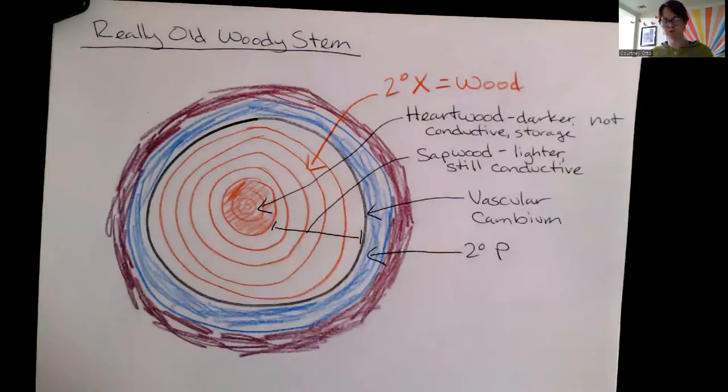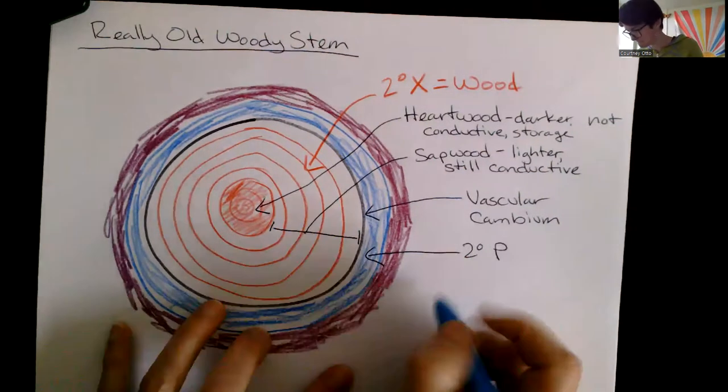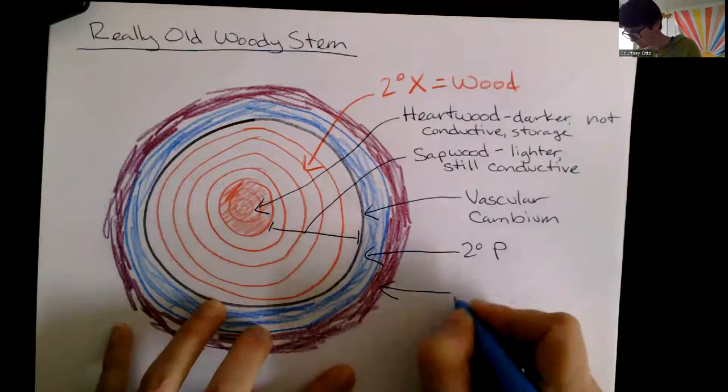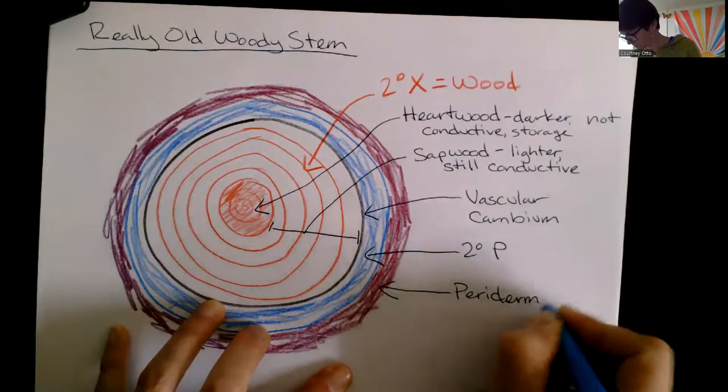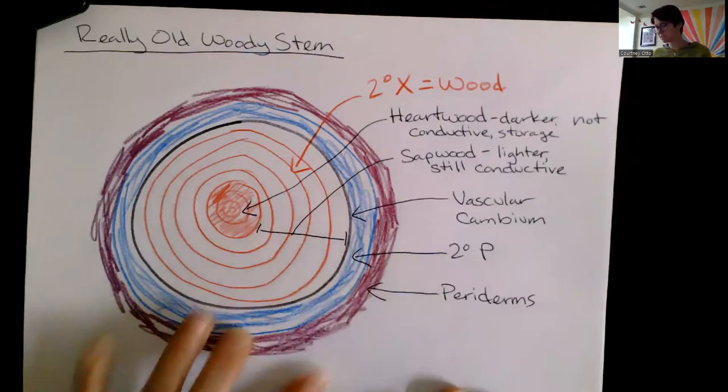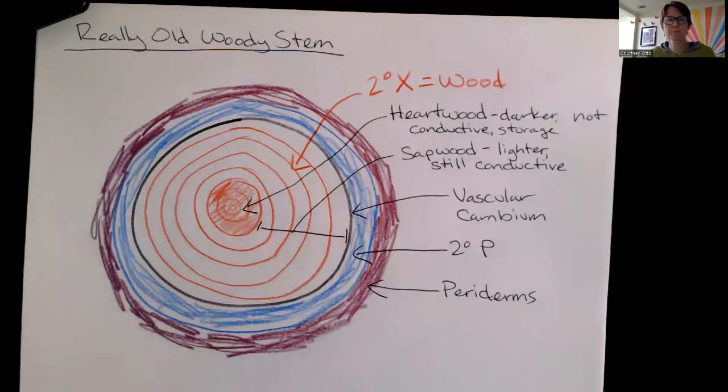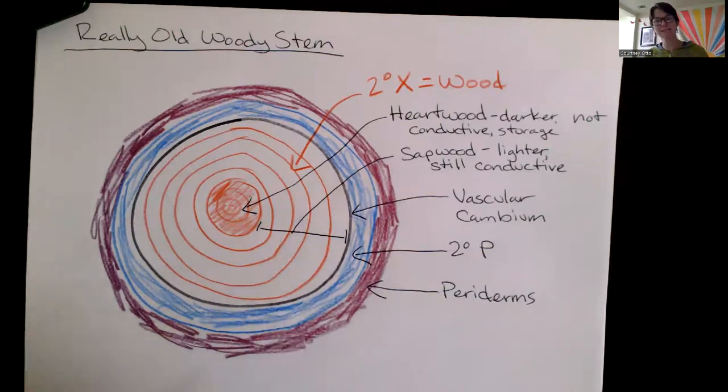These are the periderms. And notice I made that plural because at this point we've had many different periderms originate and form out here because we've had so much growth and expansion from that vascular cambium adding secondary xylem and secondary phloem.